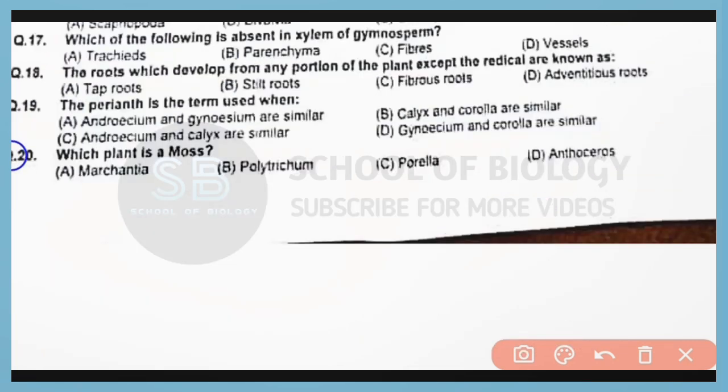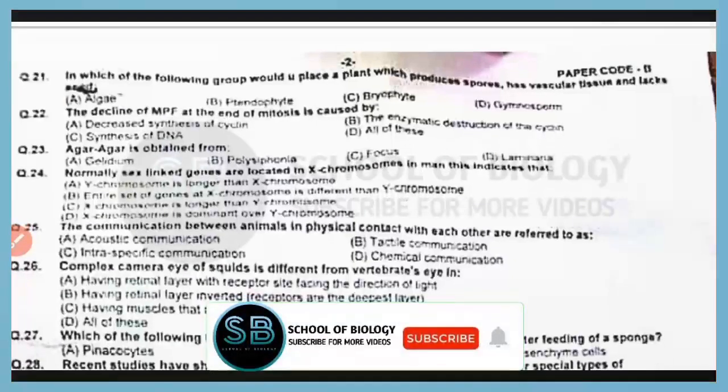Question number 20. Which plant is a moss? Correct answer is option B. Polytrichum belongs to mosses.